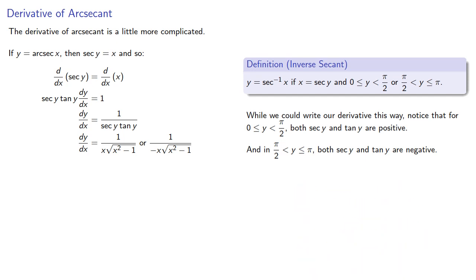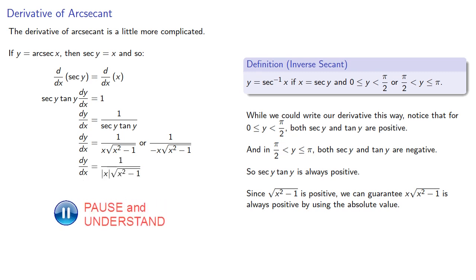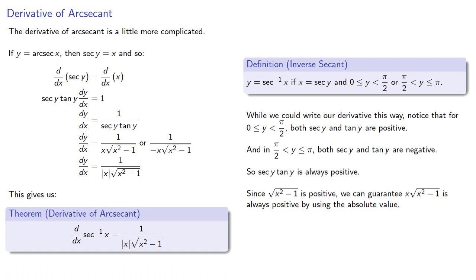So this product, secant y tangent y, is always positive. And since the square root is positive, we can guarantee the product is always positive by using the absolute value. And so we can write our derivative of arcsecant as...